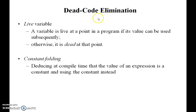The next factor is dead code elimination. Dead code means some code we may call inside the program but will not use anywhere else inside the program — it is simply present inside the program without any use. A variable is live at a point in a program if its value can be used subsequently. If the value is not used anywhere else, that code is called dead code, and it will be eliminated during optimization inside the compiler.